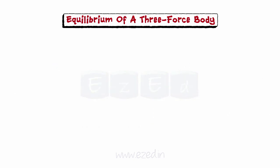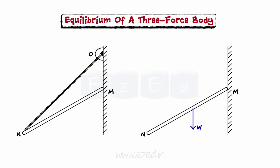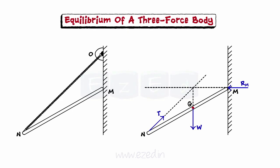Now let us consider the following example. A uniform rod MN of weight W, one end of which is resting against a smooth vertical wall while the other end is supported by a string, is in a state of equilibrium. The member MN is acted upon by three forces: a horizontal reaction RM at M, the self-weight acting at the center of gravity of the rod, and the tension T in the string acting at N. Hence, this is an instance of equilibrium of a three-force body. Thus, these three forces keep the rod in equilibrium and are concurrent as shown.